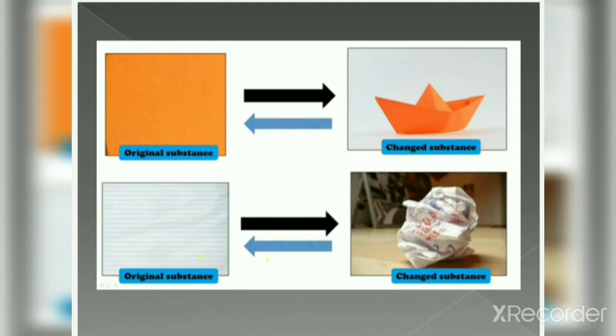Let's take one more example. We have a paper and we just crush it up. But now we want this paper back. We just have to unfold the paper and we will get it back. You get the original substance back, so again this is a reversible change — this change can be reversed.